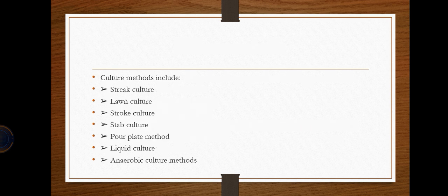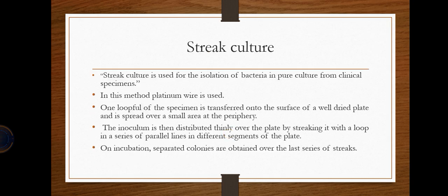The culture methods we have are: streak culture, lawn culture, stroke culture, stab culture, pour plate culture, liquid culture, and anaerobic culture methods. The most commonly remembered are the three S's — streak, stroke, and stab — plus pour plate and anaerobic culture methods.